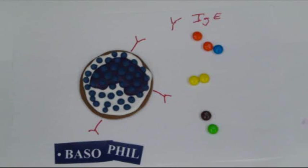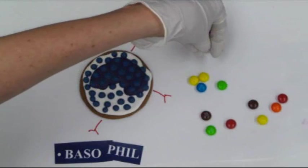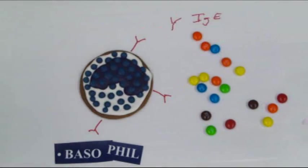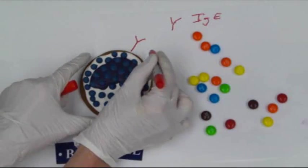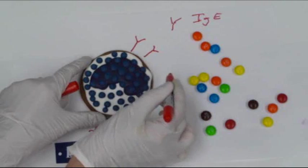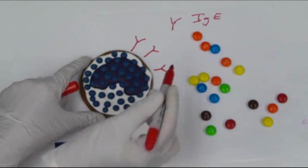But the next time you're exposed, your body can make more IgEs and more of those will be displayed on the surface of the basophil.